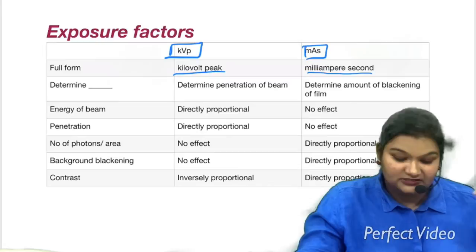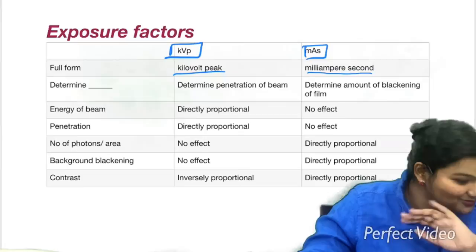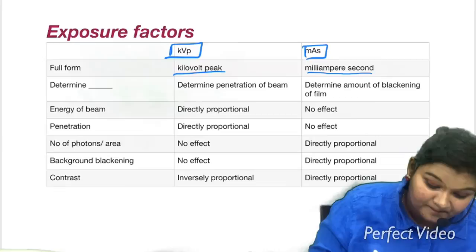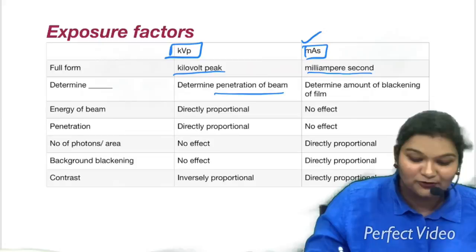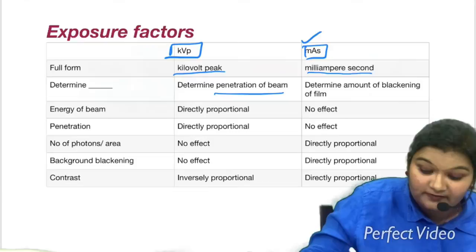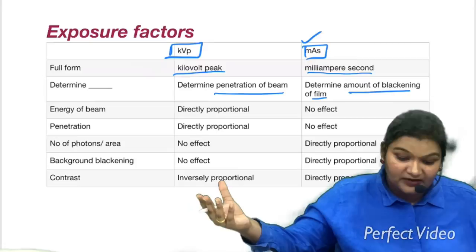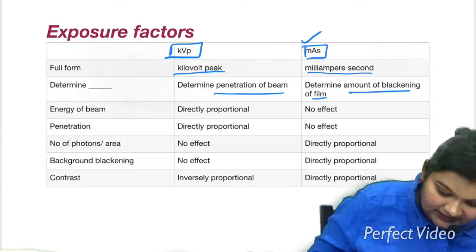As a mnemonic: K in KVP stands for 'kill' — whenever you want something to penetrate through and through, KVP determines the penetration. For MAS, think of the movie Men in Black — MAS determines the amount of blackening of the film. So KVP determines penetration of the beam, and MAS determines blackening. Higher the energy of the beam, higher the degree of penetration. KVP is directly proportional to energy and therefore to penetration power, and it has no effect on blackening.